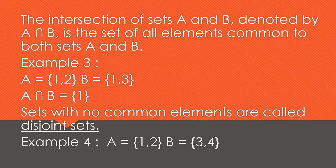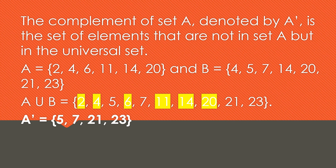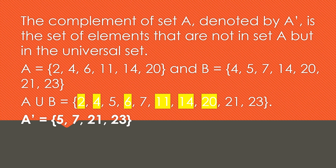The complement of set A, denoted by A prime, is the set of elements not in set A but in the universal set. Given A = {2, 4, 6, 11, 14, 20} and B = {4, 5, 7, 14, 20, 21, 23}, the union A ∪ B — also the universal set — is {2, 4, 5, 6, 7, 11, 14, 20, 21, 23}. To find A prime, cancel all elements of A from the universal set. What's left is {5, 7, 21, 23}. That is A prime.